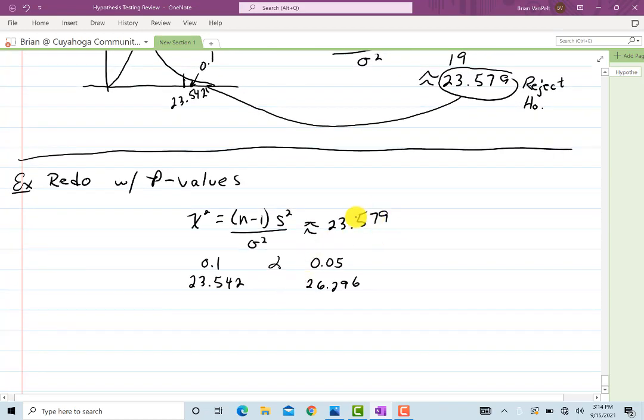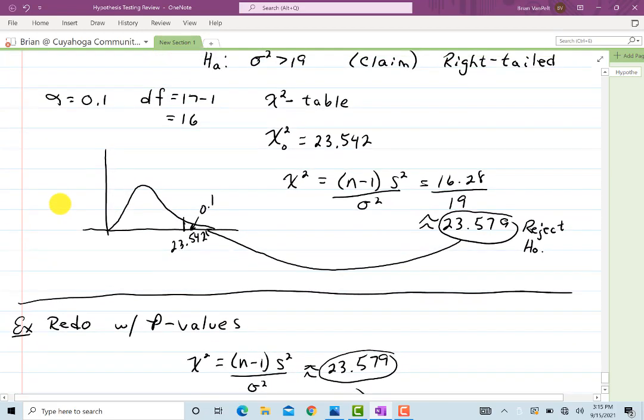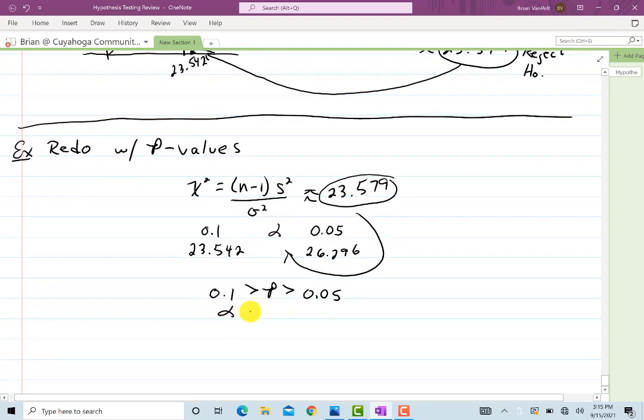Our number is in between these. So our number that we want is somewhere inside of here. That means the p-value is between 0.1 and 0.05. So 0.1 is greater than p, but p is also greater than 0.05. Now let me check my alpha. Alpha is equal to 0.1. So alpha is greater than p. That implies that we reject H naught.